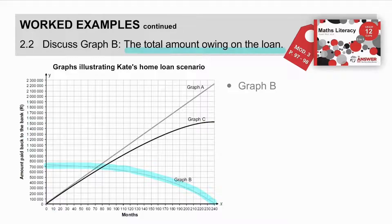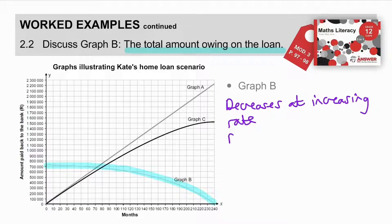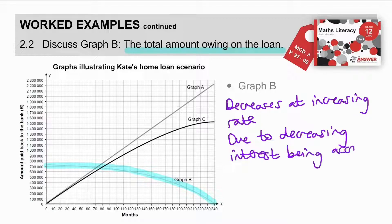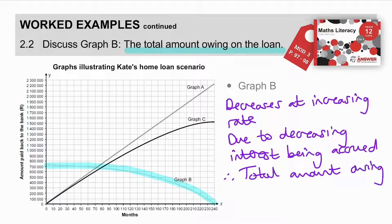Why? Let's think about it. What's happening is, throughout the home loan, the amount of interest that is being charged decreases due to the decreasing outstanding value. So, we can summarize. Graph B decreases at an increasing rate. The reason for this is due to a decreasing interest being accrued. Therefore, the total amount owing decreases.